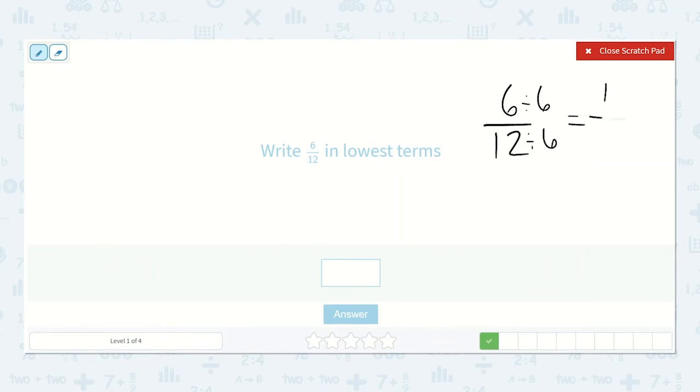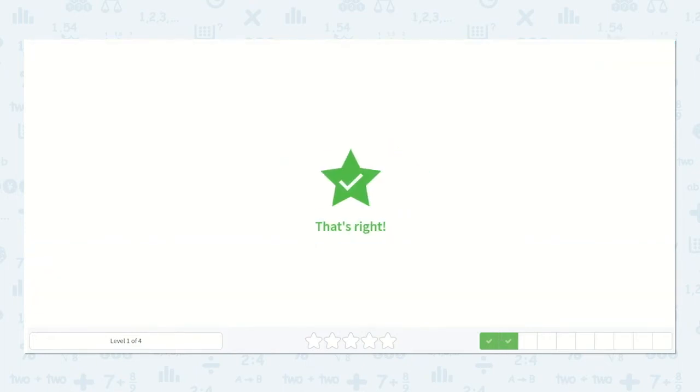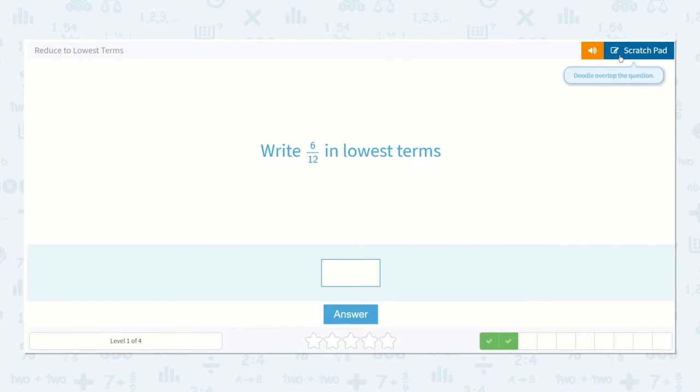6 divided by 6 is 1. 12 divided by 6 is 2, so 1 half. Right? 6 twelfths in lowest terms.